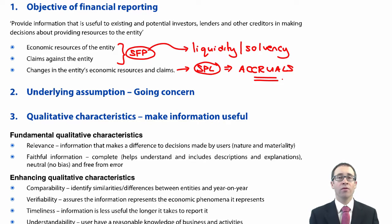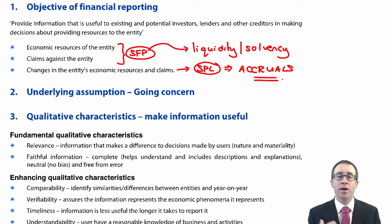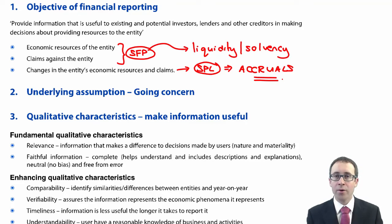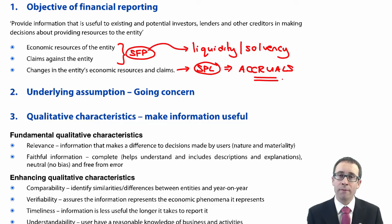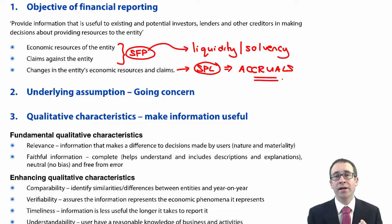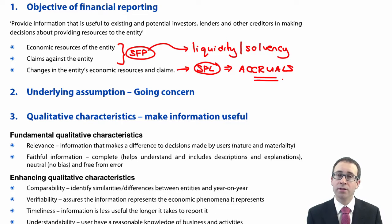We then look at the main underlying assumption in the preparation of those financial statements, which is going concern. I don't think I need to add too much — we know that going concern is thinking about your business operating for the foreseeable future, and that foreseeable future is thinking about the following year. If the business isn't going to survive for the following year, then we will prepare the accounts on a different basis — a breakup basis. But even at this P2 level, we're not really too concerned about that. We will always be preparing accounts and looking at accounting standards dealing with the going concern principle.